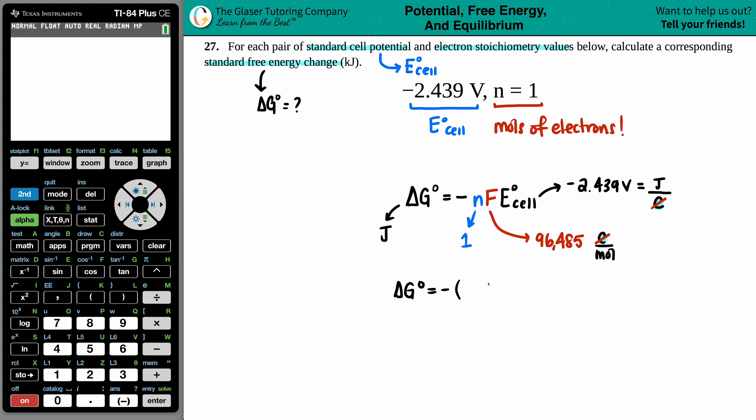Delta G equals negative. We have the n, F, and the E cell value. One for the n value, one mole. We got the 96,485. And then the E cell value was negative 2.439. So negative one times 96,485 times a negative 2.439. Let's just make sure I plugged in everything correctly. Looks good to me.